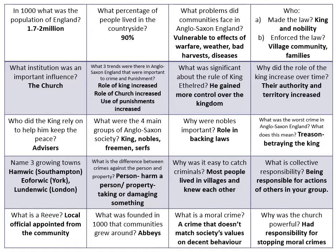The Reeve was a local official appointed from the community. Abbeys were founded around the year 1000, around which communities grew. A moral crime is a crime that does not match society's values on decent behaviour. The church was powerful because it had responsibility for stopping moral crimes.